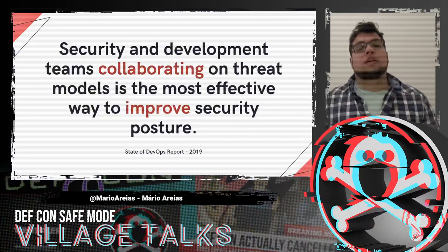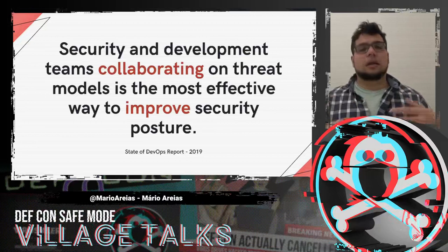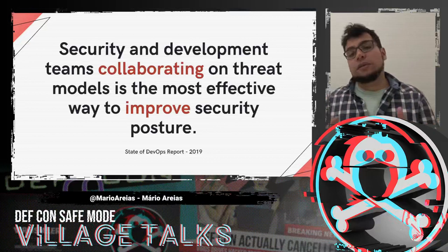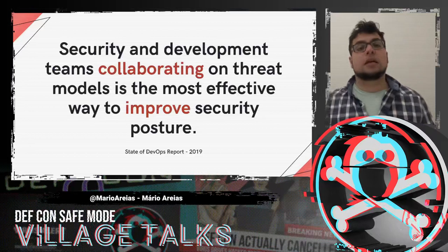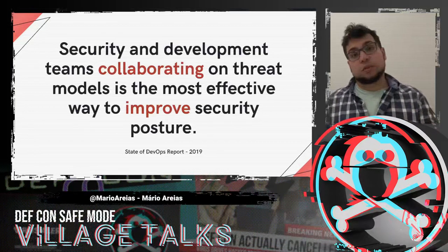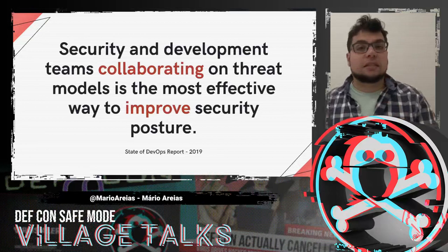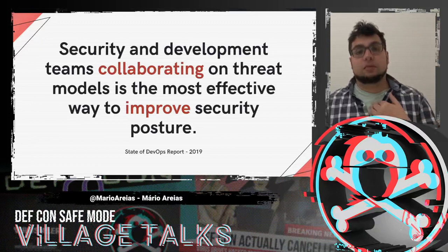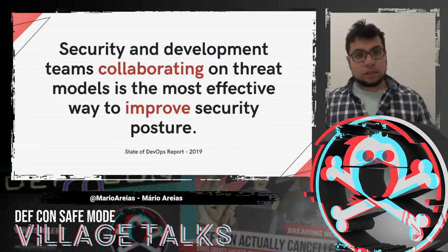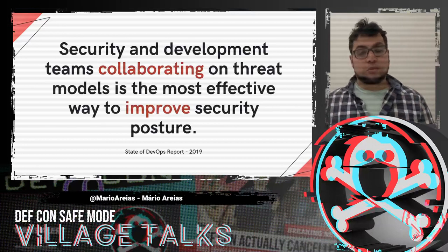The State of DevOps report is done by Puppet and different companies, where they survey different companies to get information about how efficient they are in the DevOps world. One of the things they look at is security. Across many different companies of all different sizes, the most effective way to improve your security posture is to do security collaborative threat models with the security team and the development teams. That's really, really important — and that's what I've seen in my experience as a security engineer. Every time I introduce threat modeling to a company, I can see the benefits very quickly.